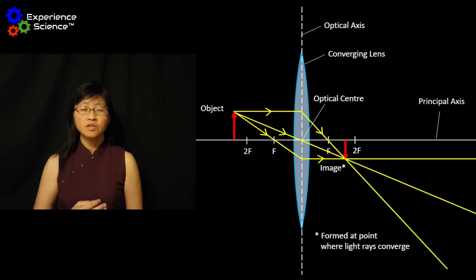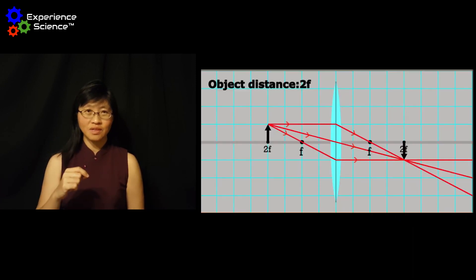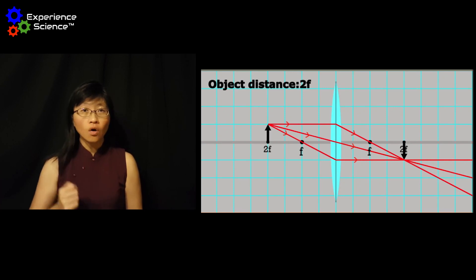let us now examine the images formed when the object is placed at different distances from the lens. An easy way to remember this is when the object is placed at 2F, or two times the focal length of the lens.